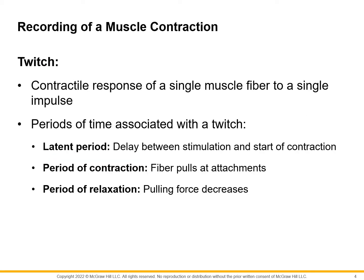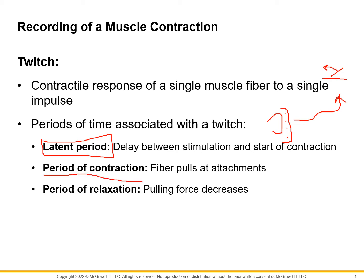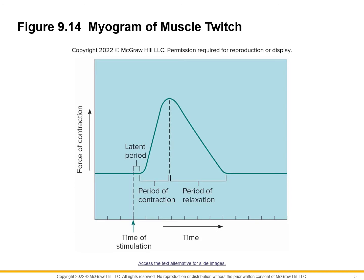A muscle twitch has three parts. The latent period is the period between when the neuron releases acetylcholine and it binds to receptors on the motor end plate — all the way until the first bit of movement where the myosin heads have bound and moved forward. The period of contraction is the period of movement where the fibers are being pulled inward. When acetylcholinesterase is released and breaks down the acetylcholine, stopping the contraction, we enter the period of relaxation.